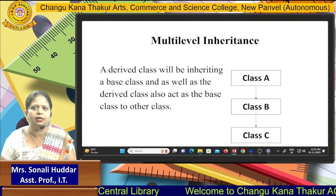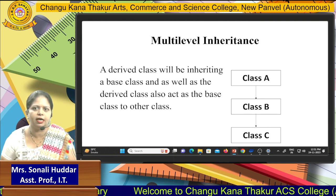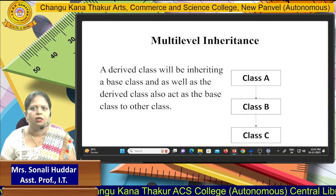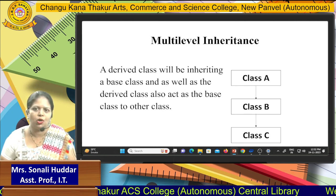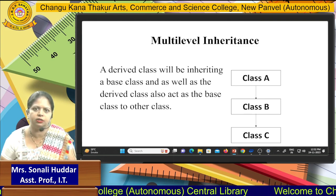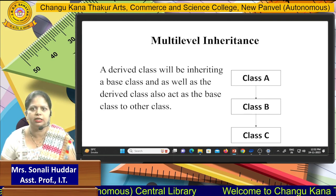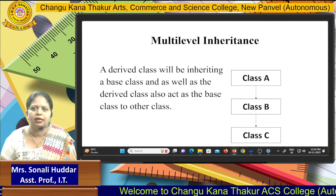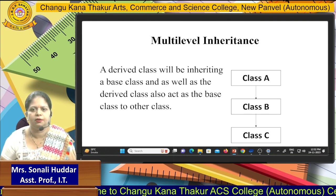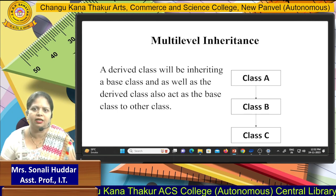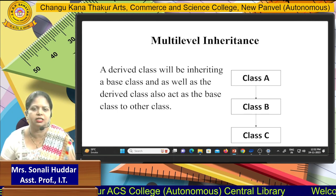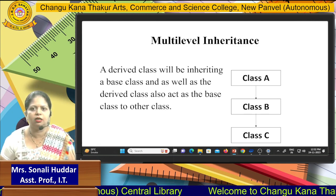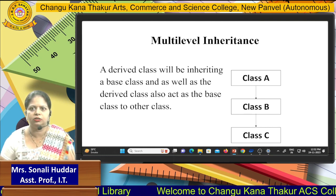The second type is multilevel inheritance. In the diagram, there are three classes: class A, class B, and class C. Class B is derived from class A, so class A is the parent and class B is the child. Class C is derived from class B, so class B works as a parent for class C, making class C the child. Here, class B acts as both a child class and a parent class.